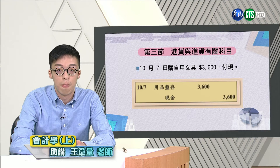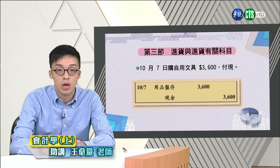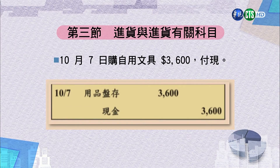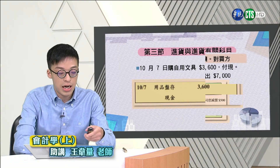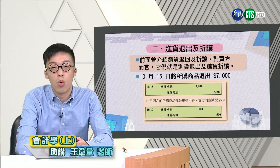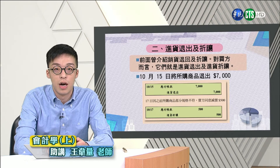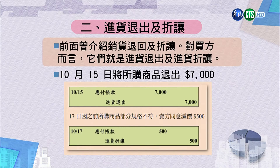十月七日購買文具用品三千六百元付現，使用用品盤存科目，採用即時轉需的會計處理方式，借記用品盤存三千六百元，貸記現金三千六百元。接下來是進貨退出及折讓，對買方而言即淨貨的退出以及進貨的折讓。